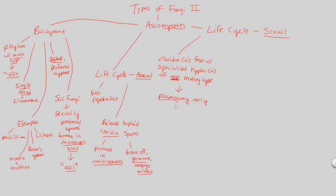What happens here is just a plasmogamy event that eventually leads to a dikaryotic hyphae — a term we've mentioned before. We've gone from a single hyphae and a single conidia to now a dikaryotic hyphae, which would be essentially an N plus N overall ploidy — not 2N, but N plus N. Two individual cells essentially in one large structure, with two separate genetic materials.